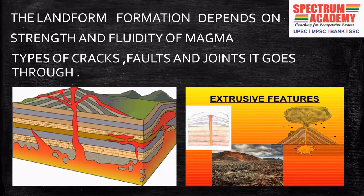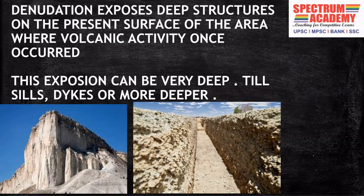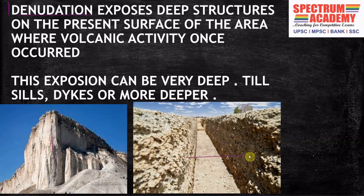When the lava comes out of the earth's crust and solidifies, it forms extrusive landforms. When the magma cools and solidifies within the crust, becoming plutonic rock, it causes intrusive landforms. Both plutonic and volcanic activities can cause igneous rocks. The layers of sedimentary or igneous rocks get exposed and resemble the flow of lava in various forms of landforms — this happens due to denudation, which causes rocks to appear as straight walls or shallow trenches, as we can see in the image.